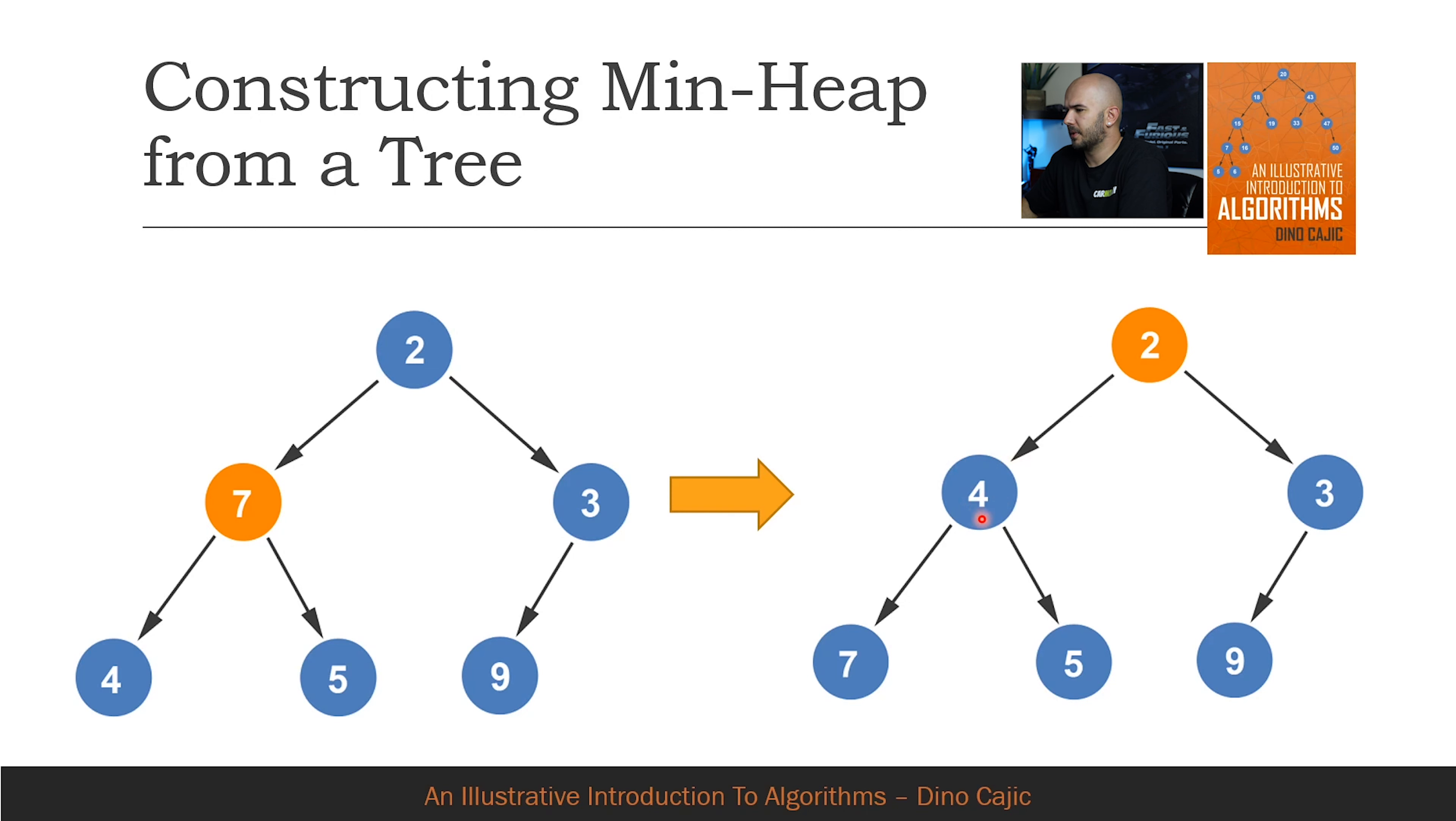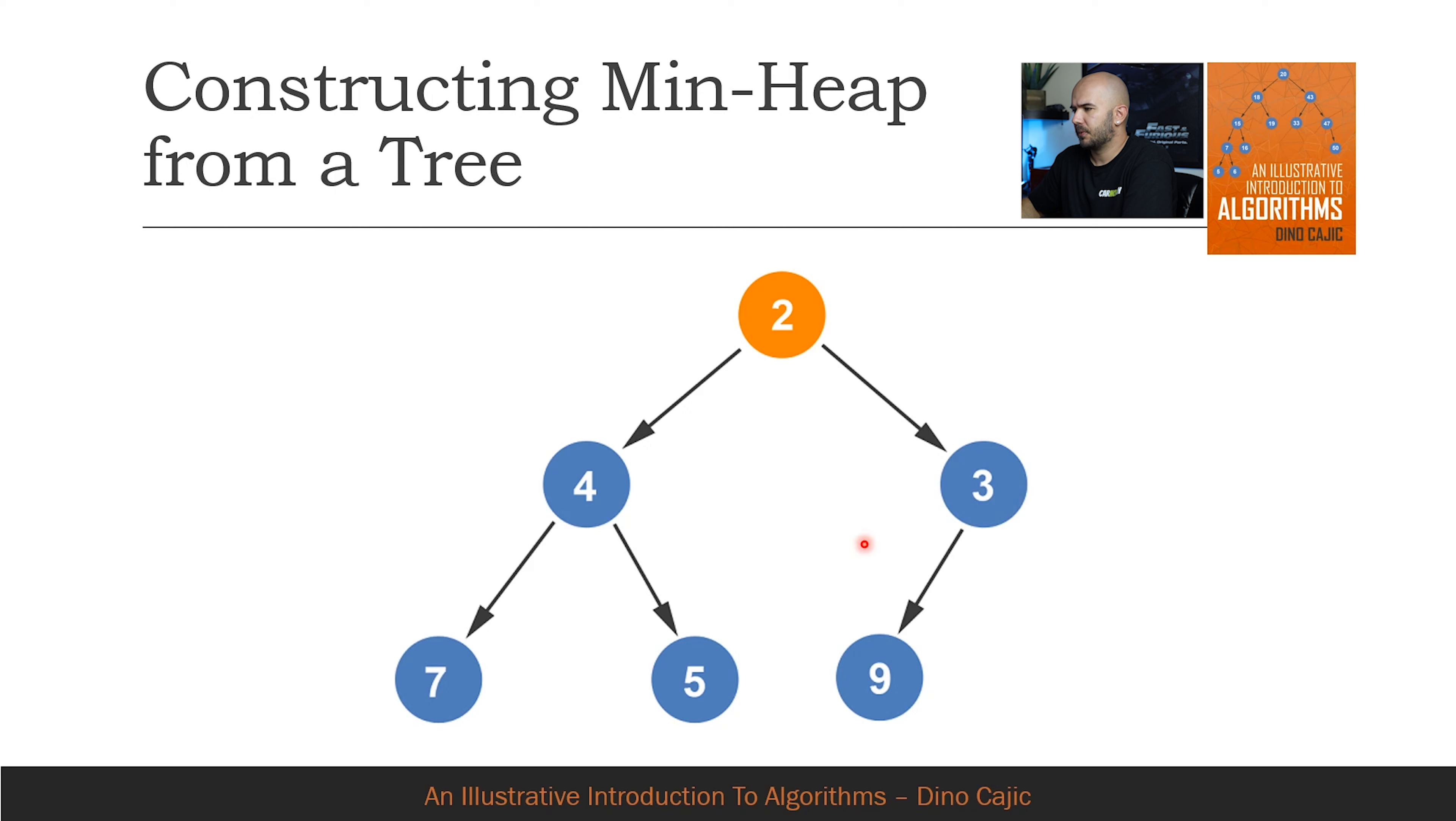The comparison node moves from the second node to the first node. A comparison is made between the two children. Since 3 is smaller, 2 is compared to 3. The first node is already smaller, so the nodes remain in their current positions.